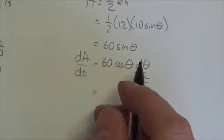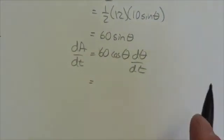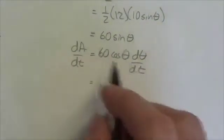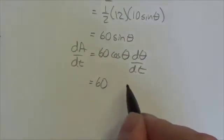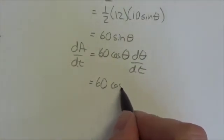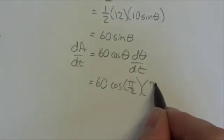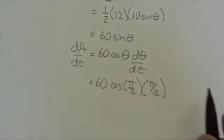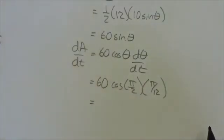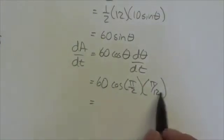Now, the nice thing about this is the dA/dt has already been isolated. I don't need to do that. All I need to do is figure out what this is equivalent to at that moment here. So we got 60 times the cosine of π/2, and then we already know that this is going to be π/12 radians per second.